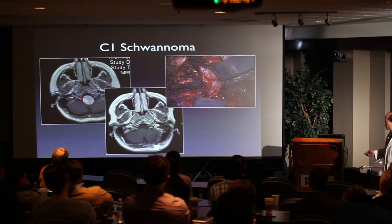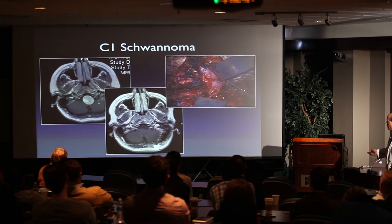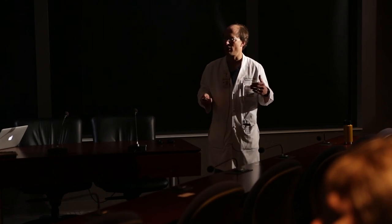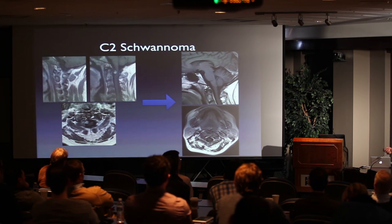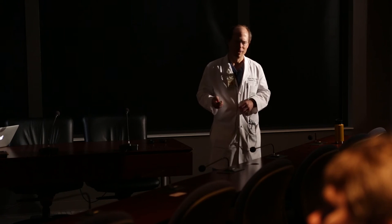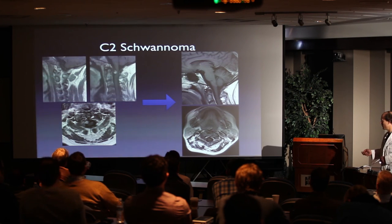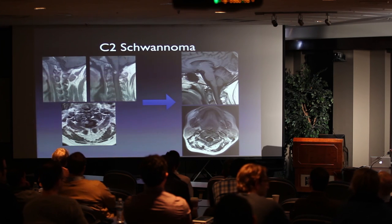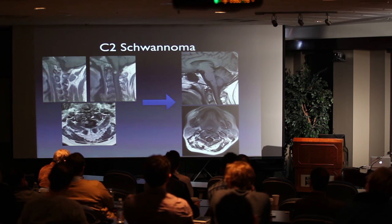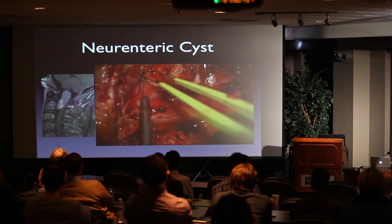C1 schwannomas are very uncommon, but the far lateral approach gives a very nice exposure. You can see this is really a midline lesion — here's the tumor, here's the condyle. The tumor has done all the dissection for you; all you've got to do is get there. Once you get there, you can infold it and get the whole tumor out. C2 schwannomas — sometimes you hear people describe marked spinal cord compression, but that's really not a lot of compression. I like to scare patients into having surgery, though, so we proceeded and it was very straightforward.